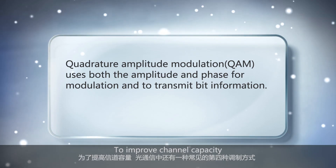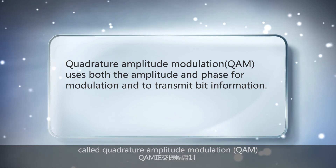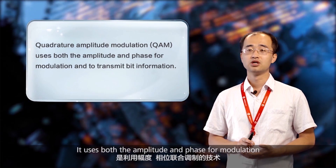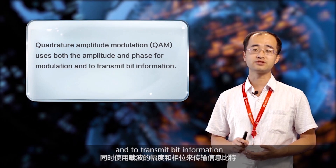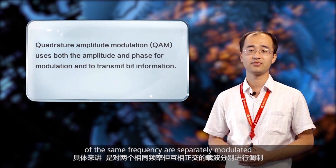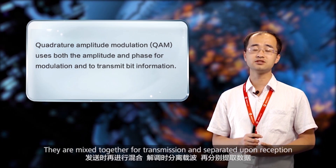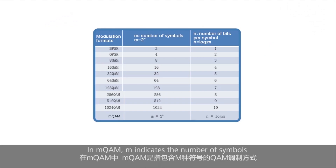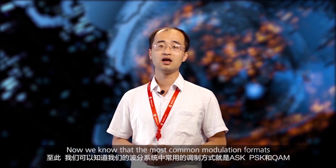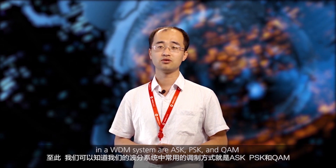To improve channel capacity, there is another common modulation format in optical communications called quadrature amplitude modulation, or QAM. It uses both amplitude and phase for modulation to transmit bit information. Specifically, two quadrature carriers of the same frequency are separately modulated, mixed together for transmission, and separated upon reception, after which the data is extracted separately. In MQAM, M indicates the number of symbols supported by the modulation format. The most common modulation formats in a WDM system are ASK, PSK, and QAM.